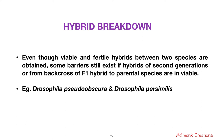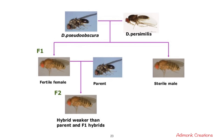The last post-zygotic mechanism is hybrid breakdown. Even though viable and fertile hybrids between two species are obtained, some barriers still exist: hybrids of the second generation or from backcrosses of F1 hybrids to parental species are inviable. An example is Drosophila pseudoobscura and Drosophila persimilis. These two species can mate, and the F1 generation can form either fertile or sterile offspring. As more and more hybrids are produced over successive generations, they become progressively weaker and eventually inviable.